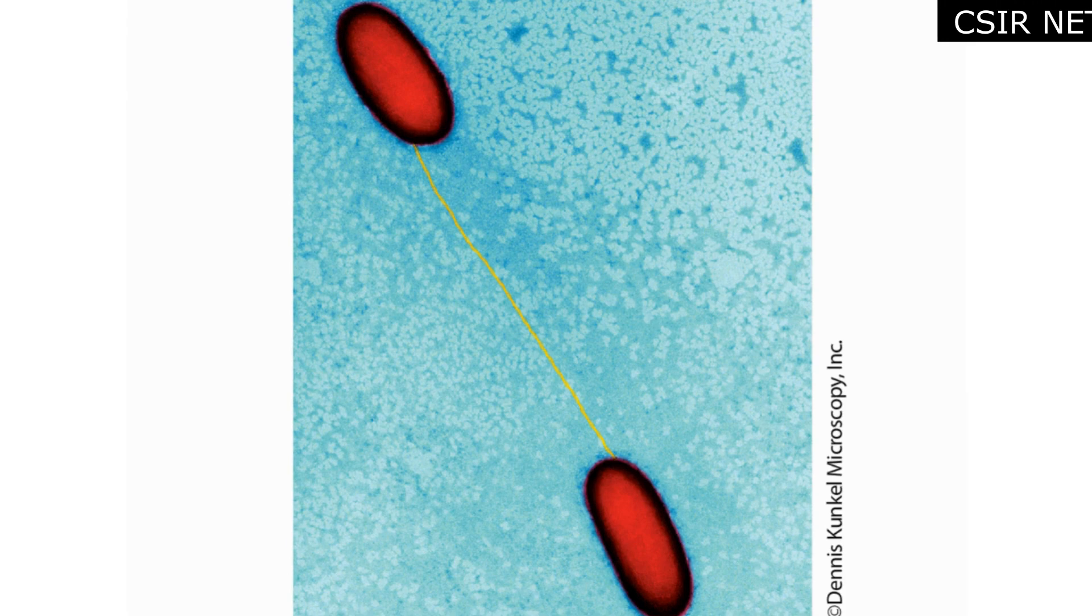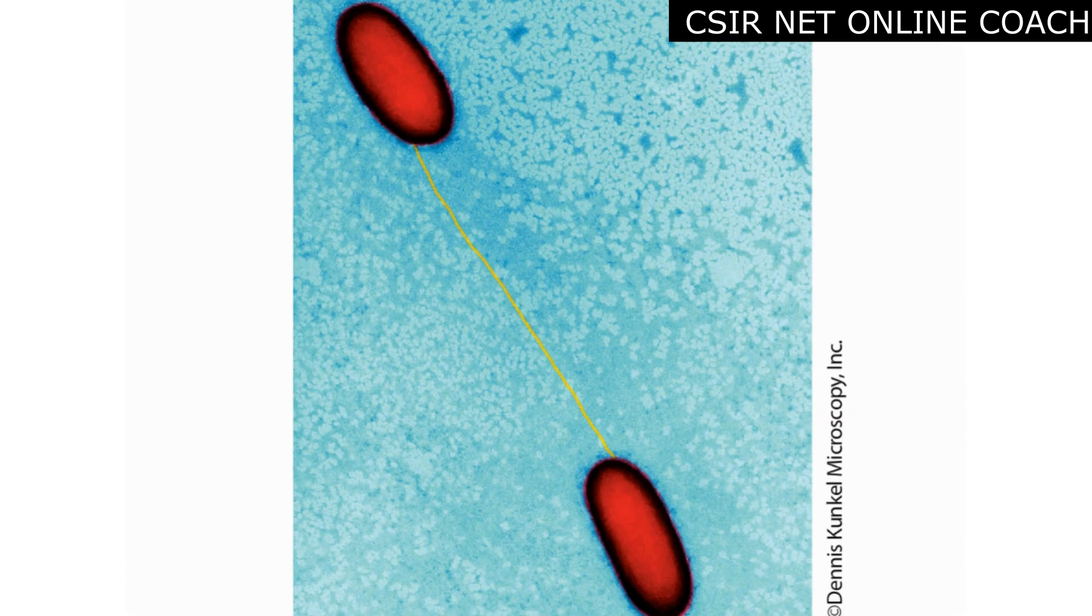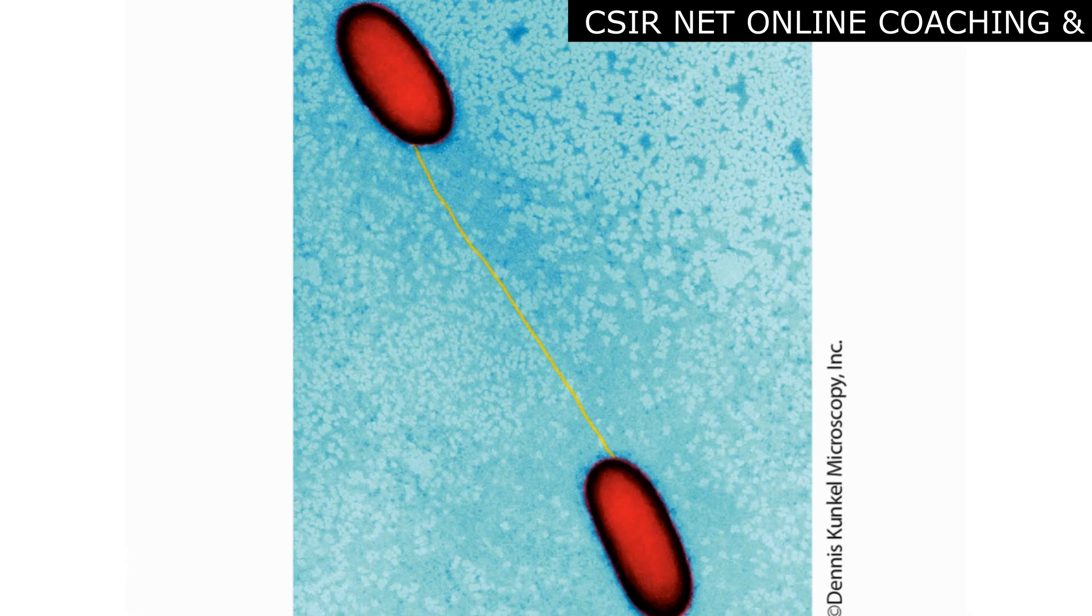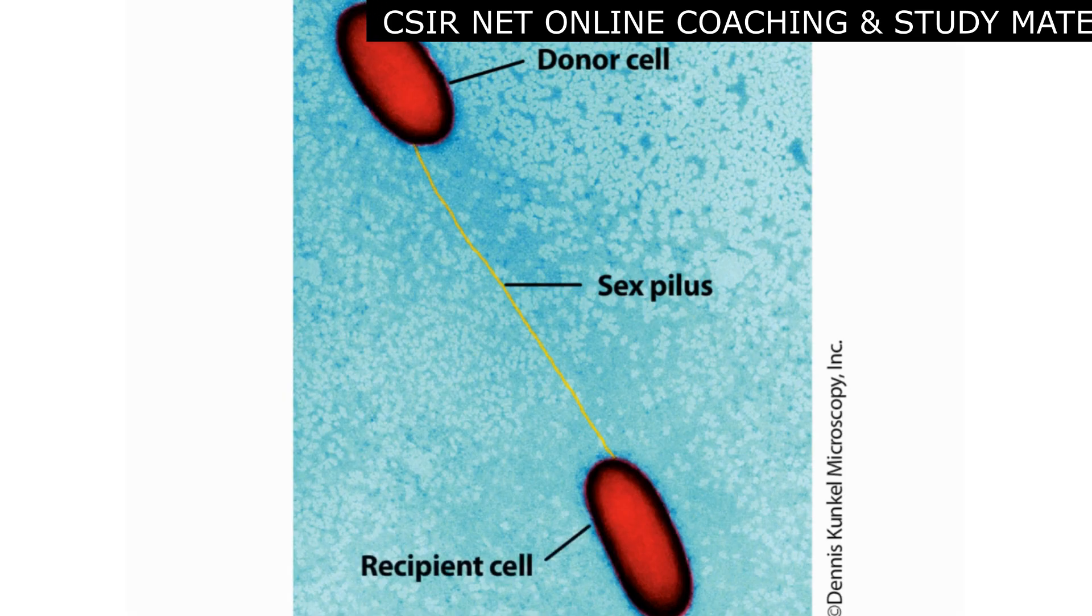Gene exchange can occur between microorganisms by a variety of means, including one called conjugation. Conjugation requires cell-cell contact, typically initiated by special sex pili protruding from a donor cell and contracting to a recipient cell, as shown here in the E. coli cells.